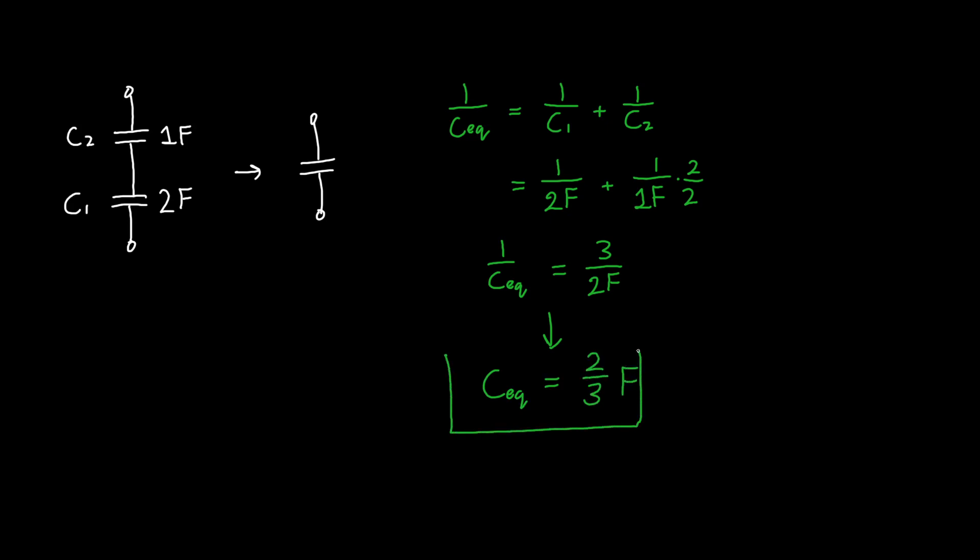Now, notice that one interesting thing about this is that it's less than either one of the capacitors individually. And this is actually always true. You can prove it for capacitors that are in series. Your equivalent capacitance is always going to be less than any one of the individual capacitances. But it's kind of a useful thing to know. So this is two-thirds of a farad.